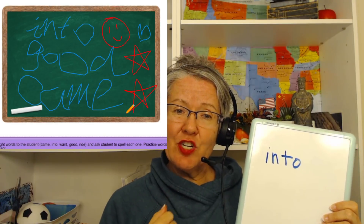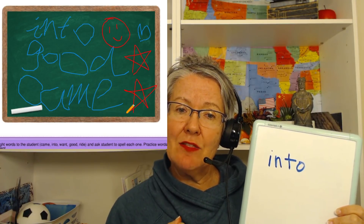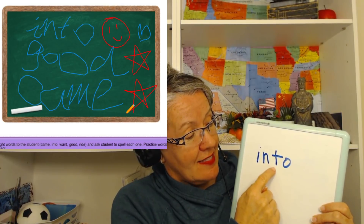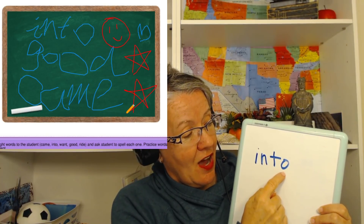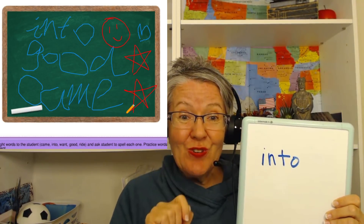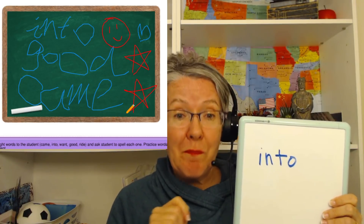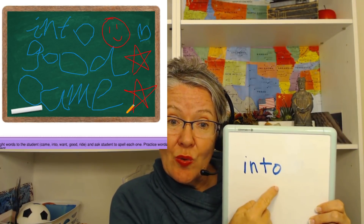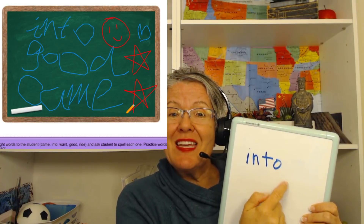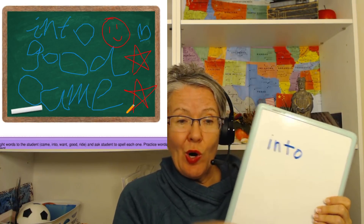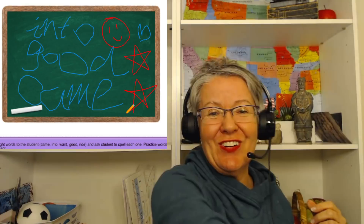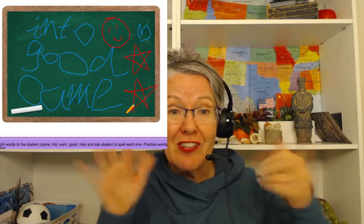I model it like this: 'Teacher Melissa, spell into — I, N, T, O — into.' Then I say, 'Now you try, Coco, spell into.' Coco spelled it with the letters, said the word, I drew a smiley face next to it, and she drew a little heart.